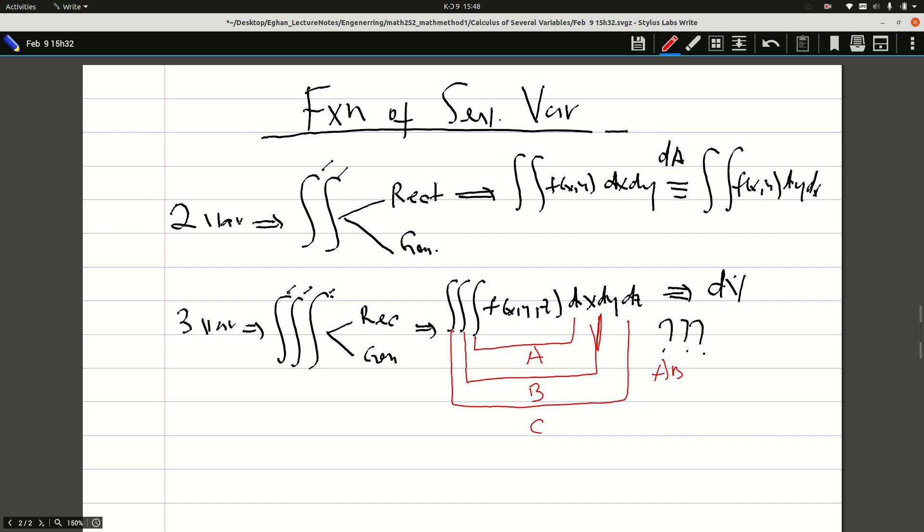I can have ABC as the first one, ACB as 2, BCA as 3, BAC as 4, CBA as 5, and CAB as 6. These are the possible ways I can solve this triple integral.